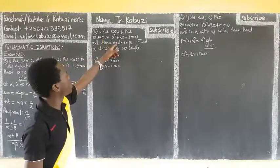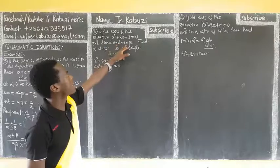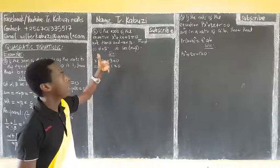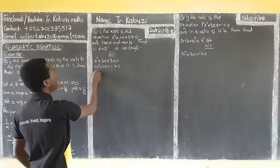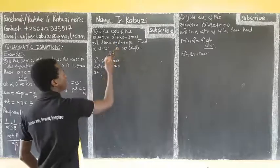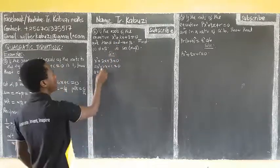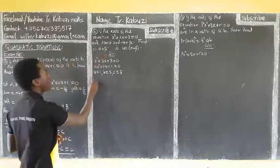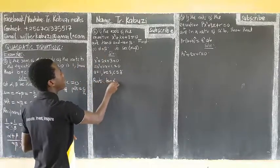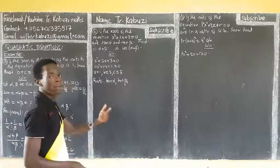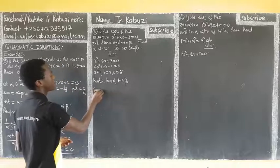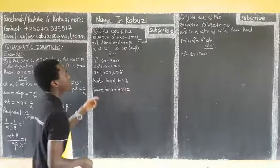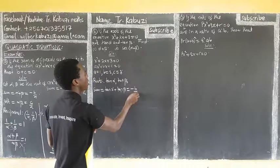Now the next problem: tan alpha and tan beta are roots of an equation. We need to find tan(alpha plus beta) and also sec(alpha plus beta). We compare our equation with the general form to get a equals one, b equals two, and c equals three. Their sum, tan alpha plus tan beta, equals negative b over a, which is negative two.